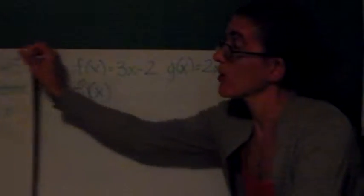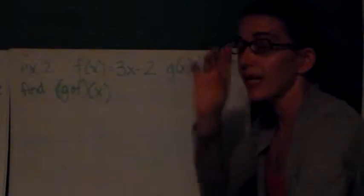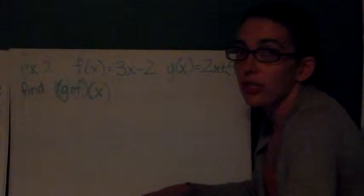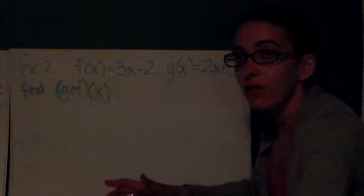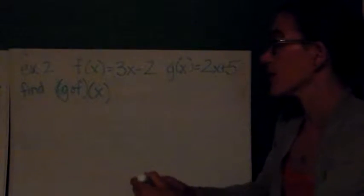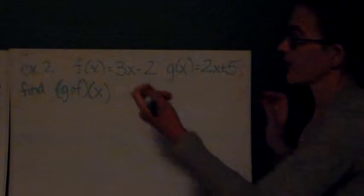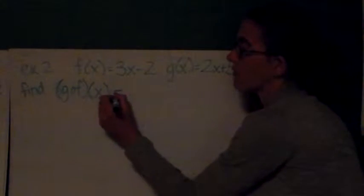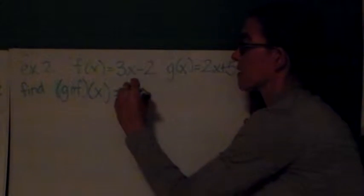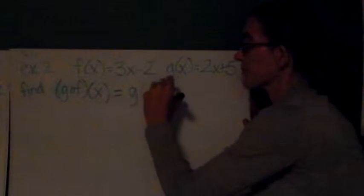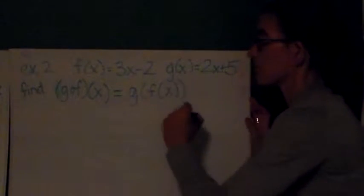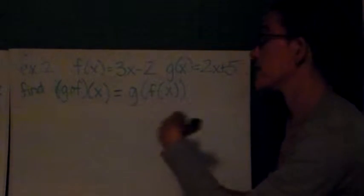Now we're going to work with the same functions, but we're going to reverse the order. We know many operations, like addition and multiplication, work the same and give the same result if you switch the order. Is this true of composition? Well, now I'm going to check by finding g of f of x. So again, I'm going to rewrite so that it's clearer. Not a step you have to take, but one that I strongly recommend.